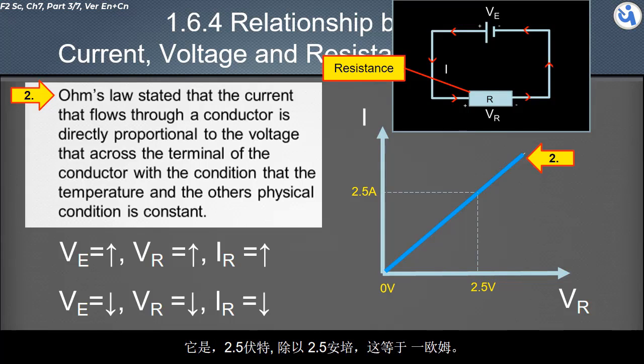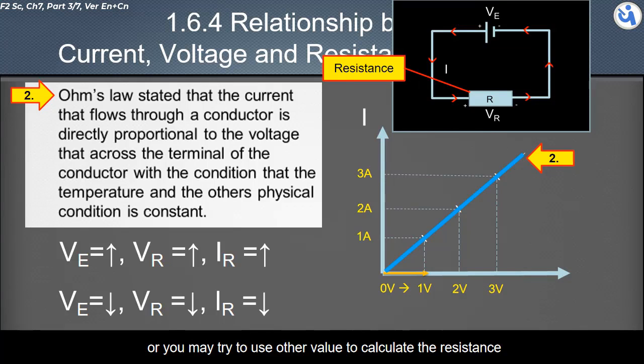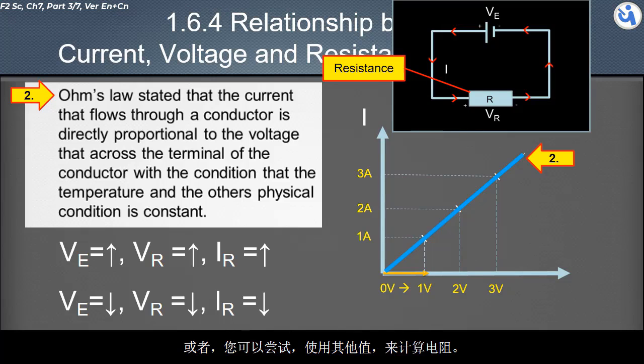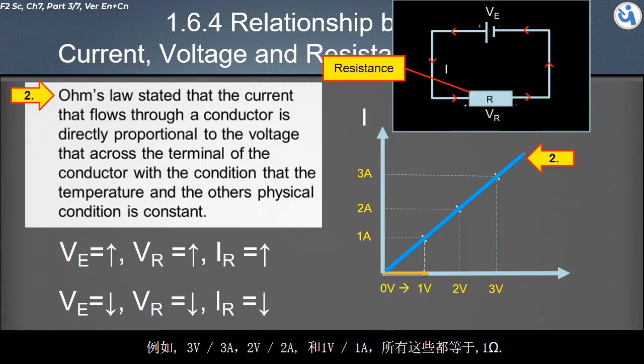The resistance is the voltage divided by the current flowing through the resistor. It is 2.5 volts divided by 2.5 amperes, which equals 1 ohm. Or you may try to use other values to calculate the resistance. For example, 3 volts divided by 3 amperes, 2 volts divided by 2 amperes, and 1 volt divided by 1 ampere. All of these are equal to 1 Ohm.